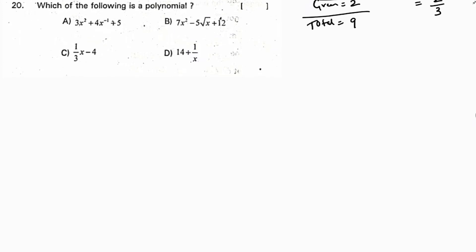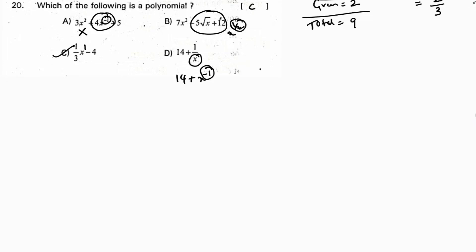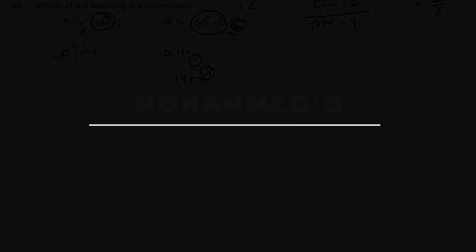Final question: which of the following is a polynomial? A polynomial is an algebraic expression where the power of the variable is a whole number. Options with powers like −1, 1/2 (as in √x = x^(1/2)), or any non-whole-number exponent are not polynomials. The expression with x to the power of 1 is the correct polynomial. Correct option is C.